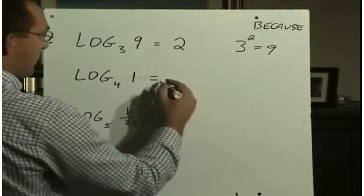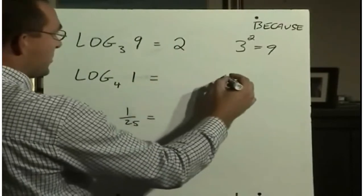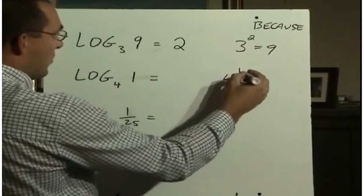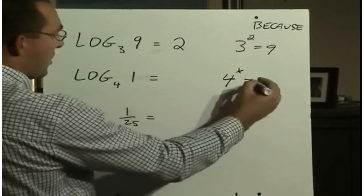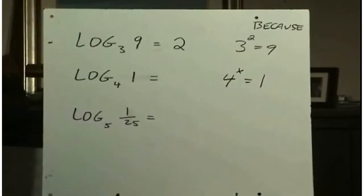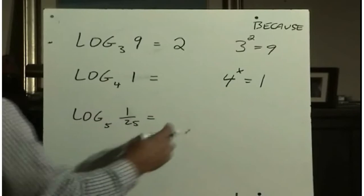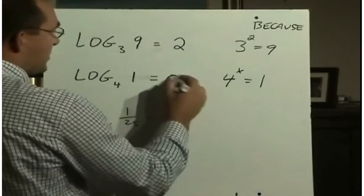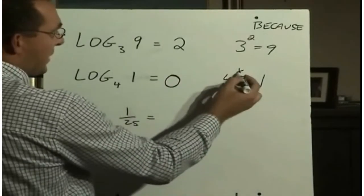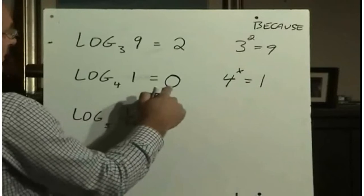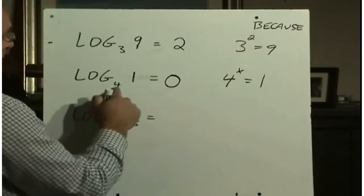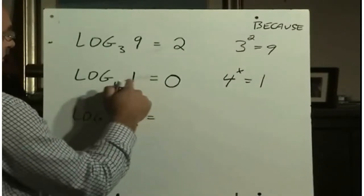Here's another one. So if you didn't know what this is, you could ask yourself, what is the exponent on 4 that will equal 1? Remember back to your exponent laws. Any number to the power of 0 is equal to 1. So this answer will be 0, because 4 to the power of 0 equals 1.